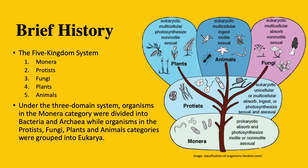The Five Kingdoms system consisted of these categories: Monera, protists, fungi, plants, and animals. Under the new system, which is the three domain system, organisms in the Monera category were divided into Bacteria and Archaea, while organisms in the protists, fungi, plants, and animals were grouped into Eukarya.